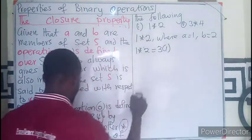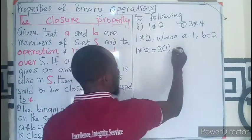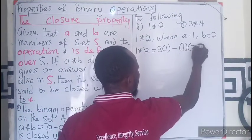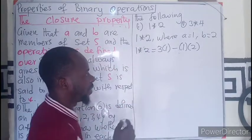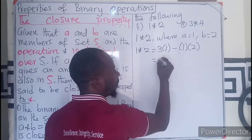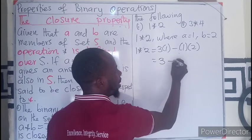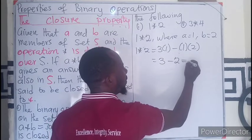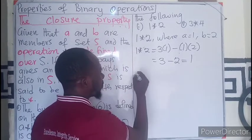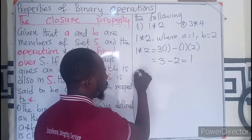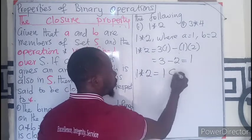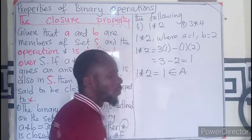3 times 1 minus the product of the 2 terms, 1 times 2. In this case, we get 3 minus 2 which gives us 1. So 1 star 2 equals 1, which is an element of the set A.